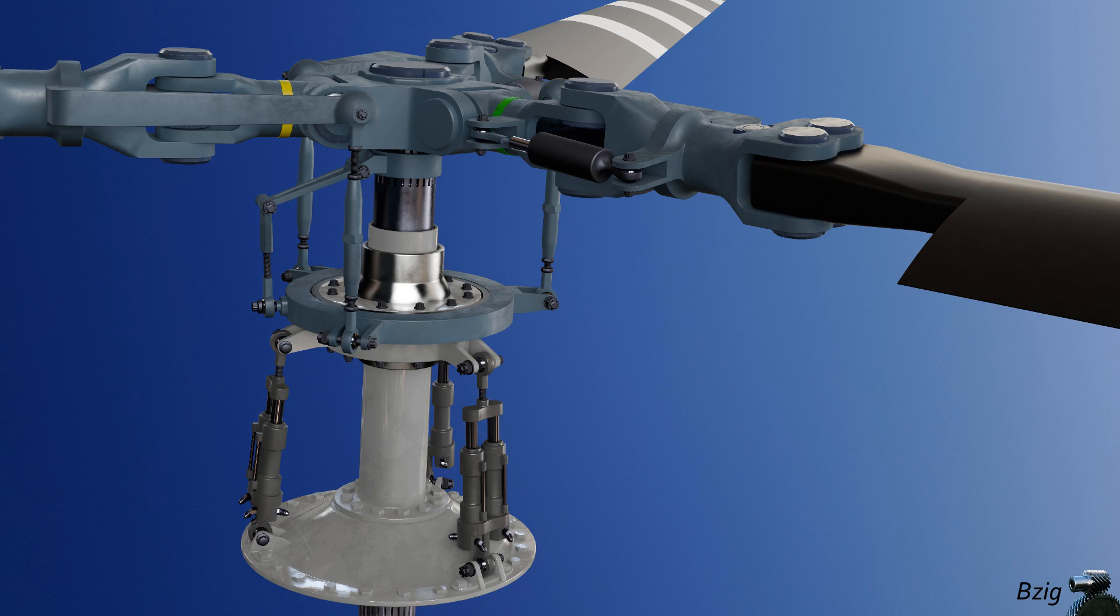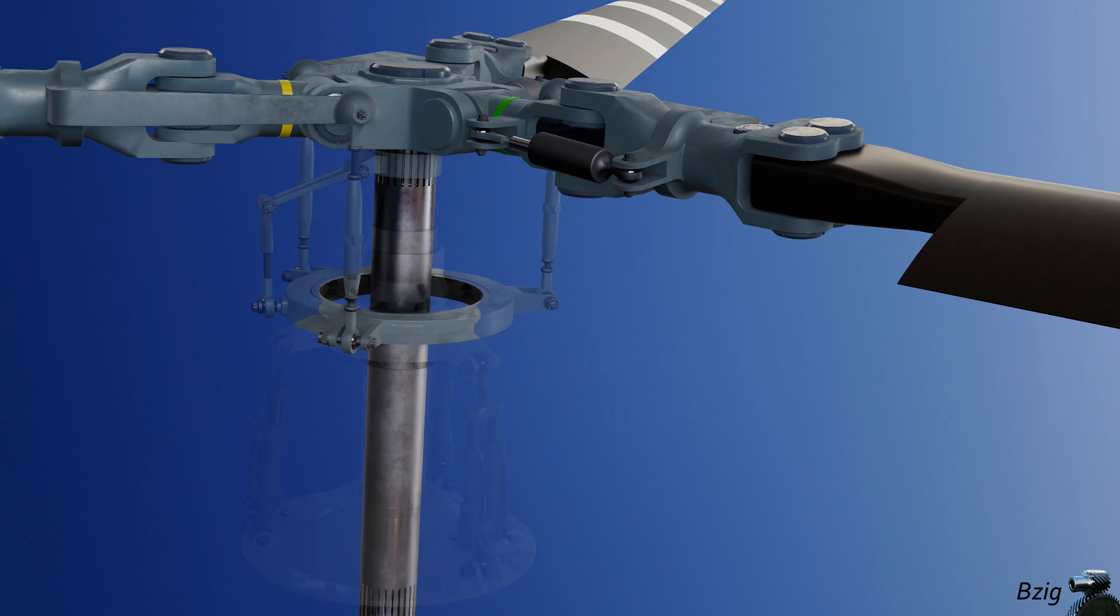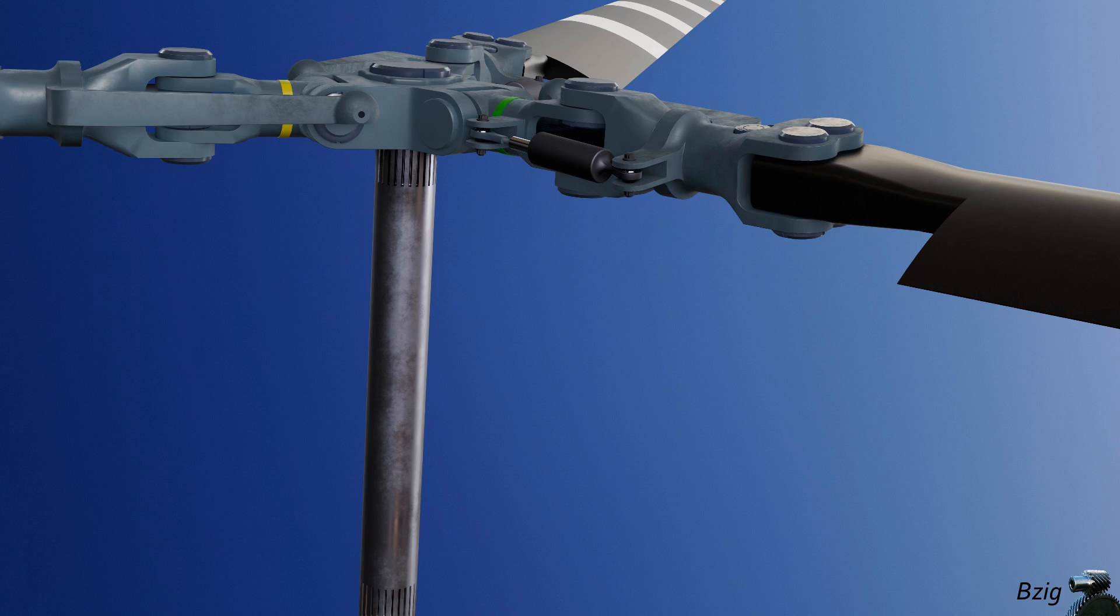To move the control motion from the stationary frame of reference to the rotating frame of reference, there are two sets of controls connected via a swashplate. These are the non-rotating controls and the rotating controls. To show these, I'll hide everything except the mast hub and blades, and then I'll start connecting the two sets of flight controls in the video.